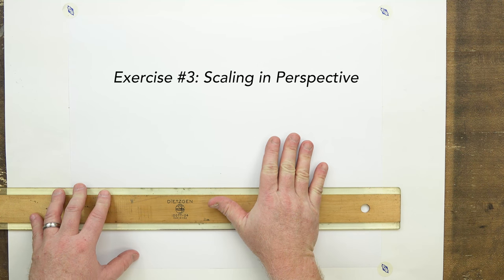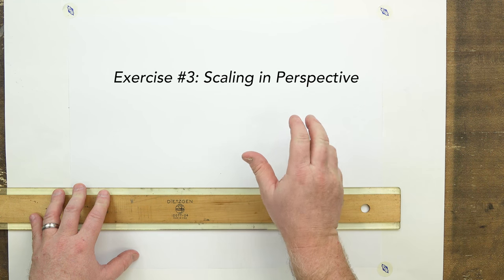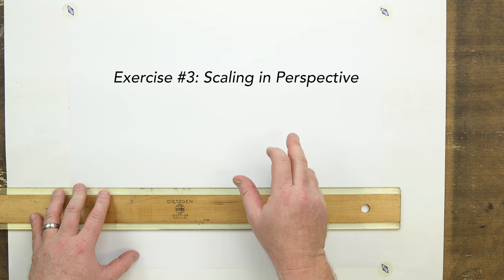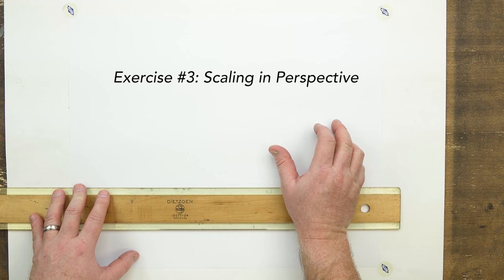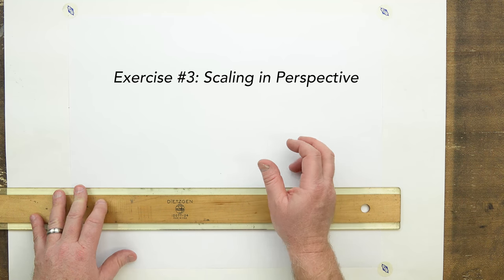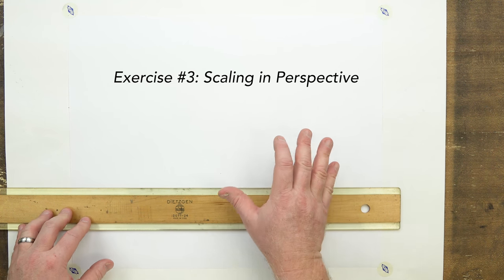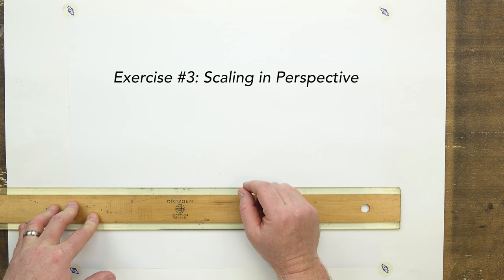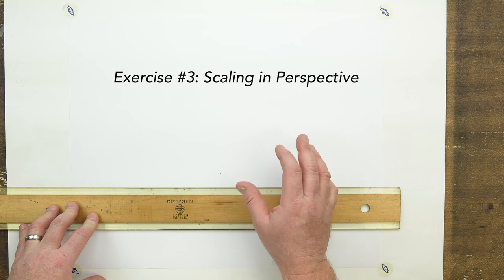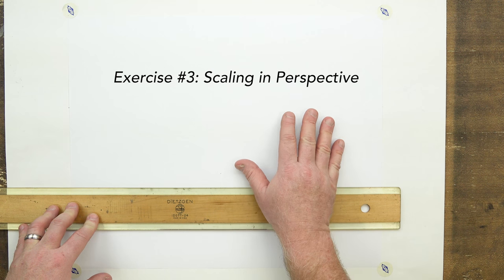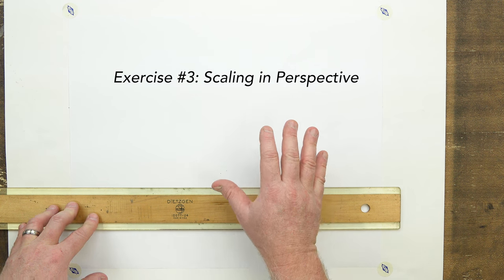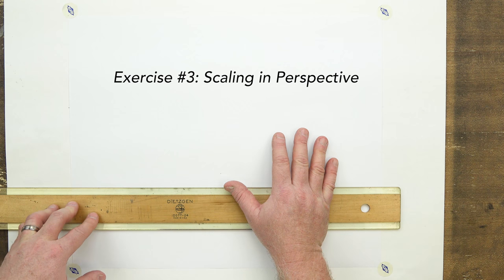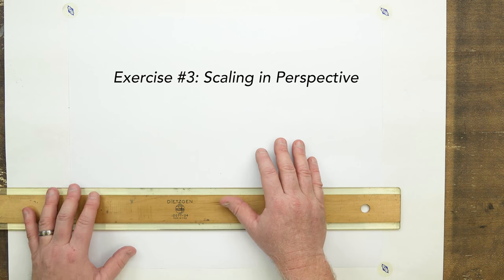Okay, exercise three now. So in one and two, we used referencing of simple objects and also referencing with human form. Now we're going to add another component to that in exercise three and four. This exercise, number three, we're going to introduce you to scaling — that's another way to do referencing.